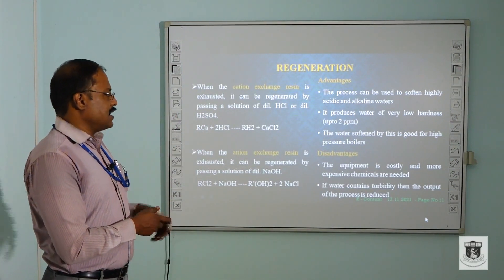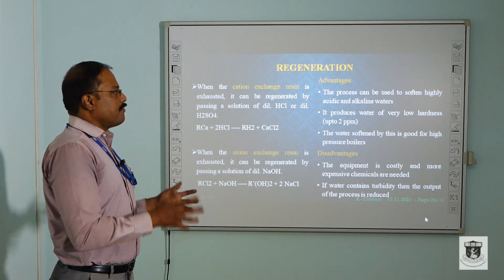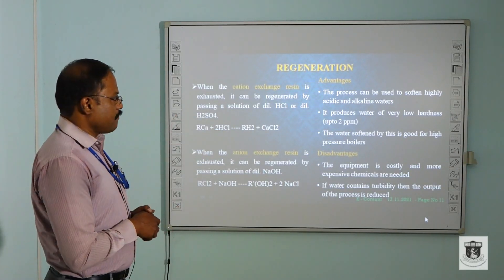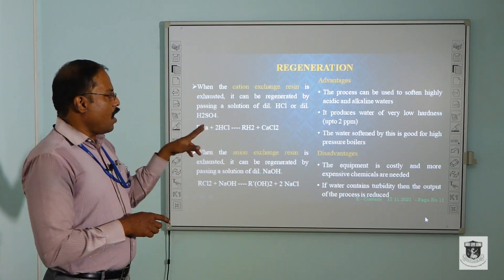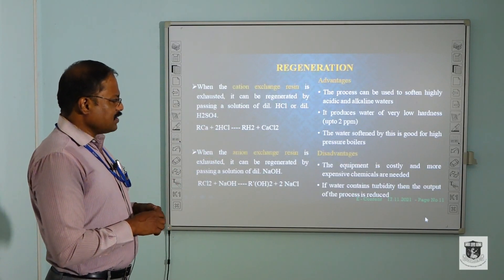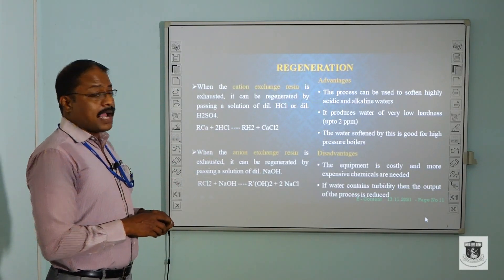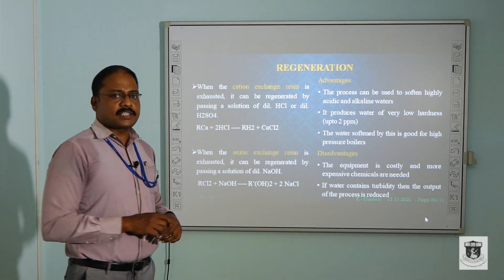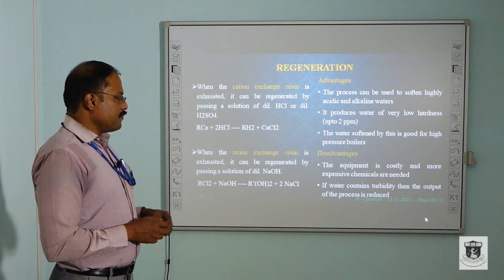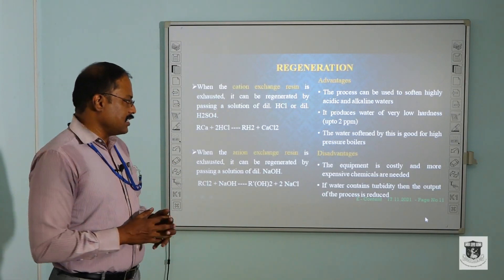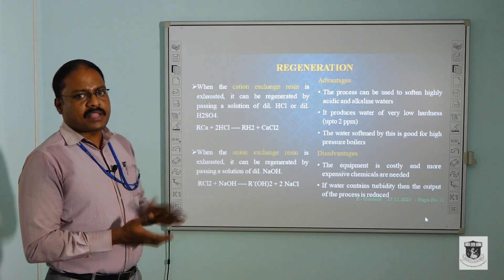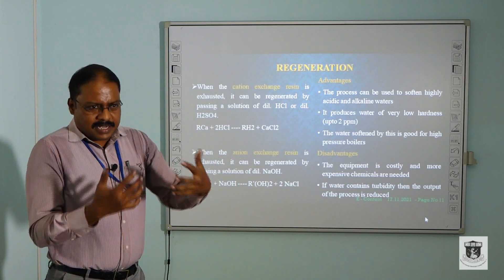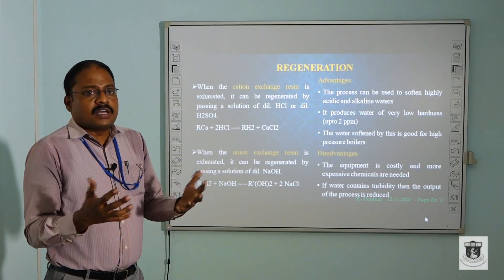Advantages and disadvantages of the ion exchange resin process: The process can be used to soften highly acidic and alkaline waters. It produces water of very low hardness, up to 2 ppm. Disadvantages: the softened water is costly and more expensive chemicals are needed. If the water contains turbidity, the output of the resin is reduced. Finally, these are all the important titles of water technology. At least we now know how we can remove the hardness from the water.